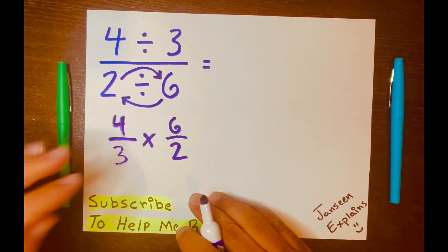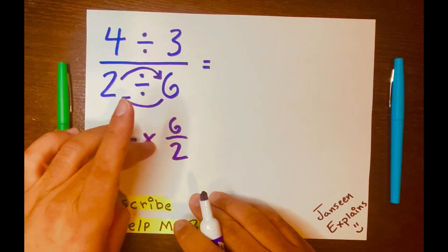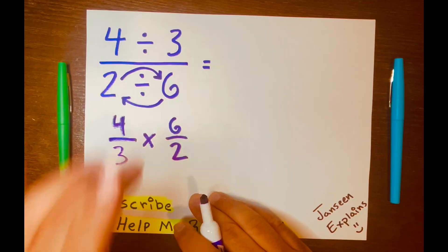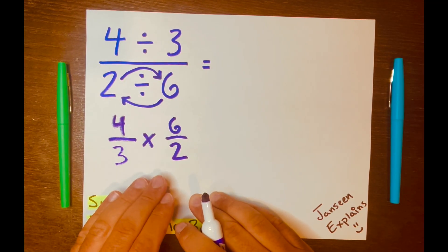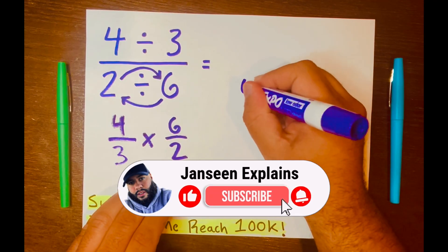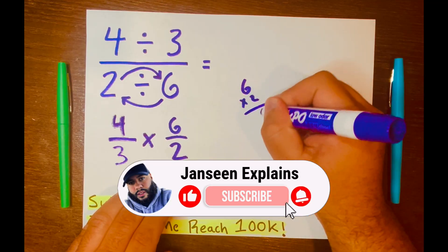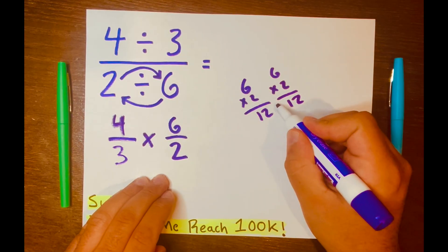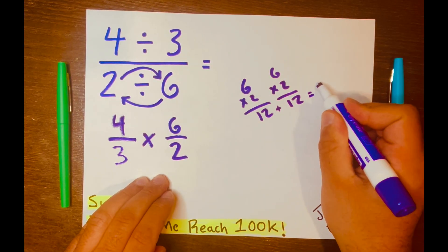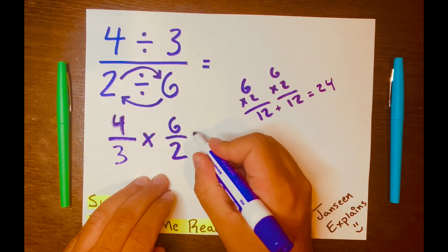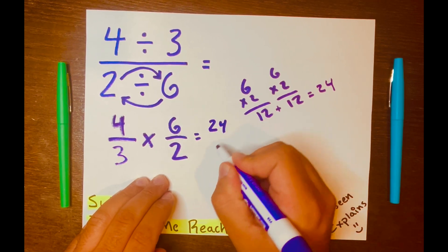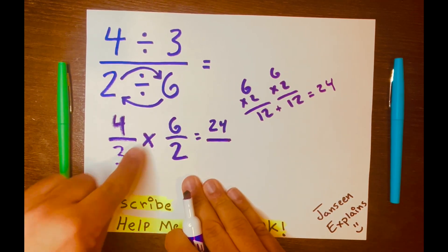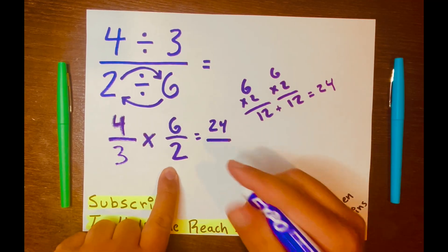And all you have to do is multiply across. So four times six. What is that? Four times six. Well, six times two is 12, and six times two again is 12. And when you add these two numbers, they give you 24. So we have 24 and then over three times two. That is six.